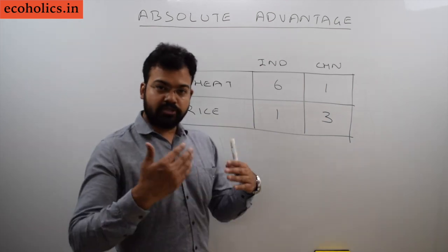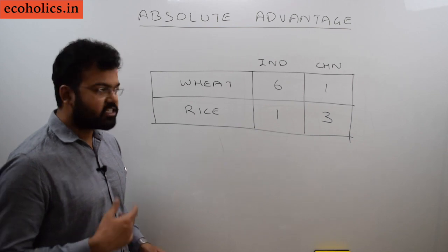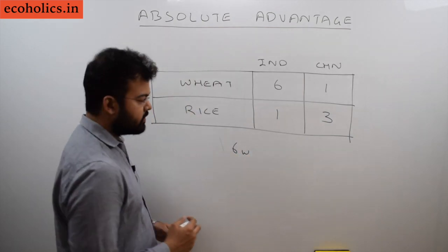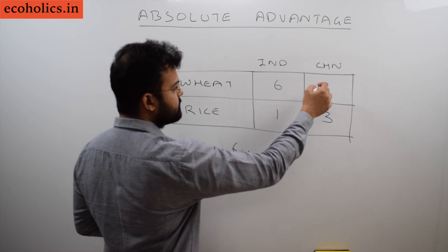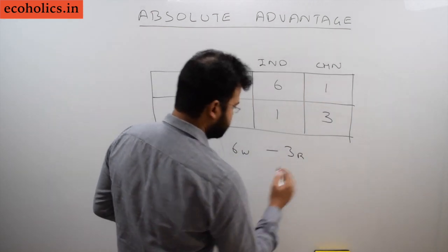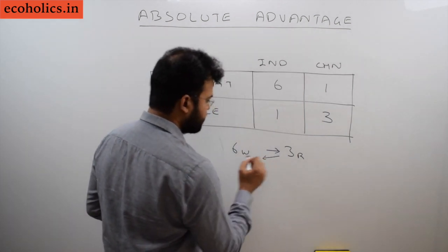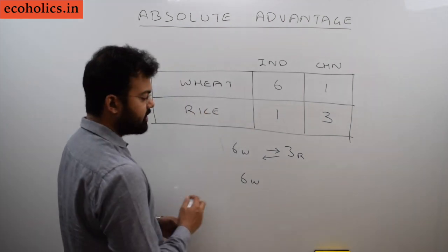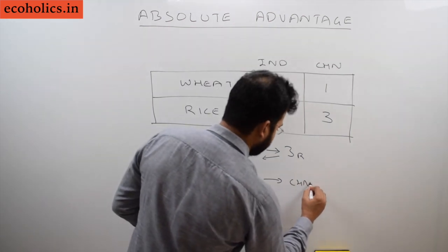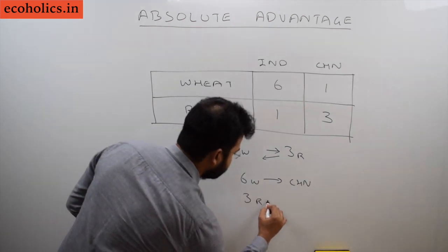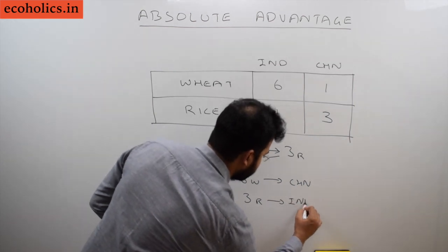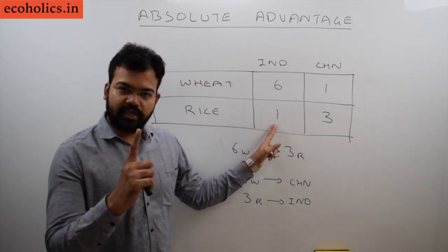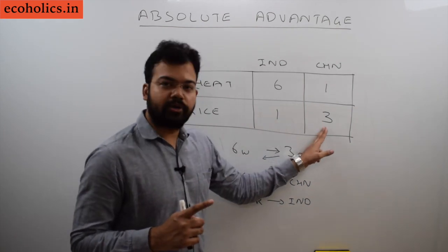So what should they do? They should produce a surplus amount and exchange. India will produce six units of wheat and give them to China, while India will receive three units of rice from China. This is how export and import will occur through international trade.